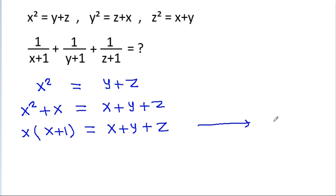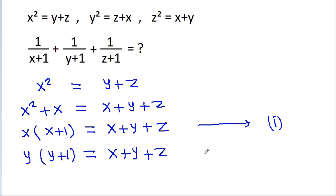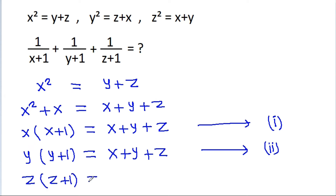We have y squared is equal to z plus x, so by the same way we can get y times (y plus 1) is equal to x plus y plus z. Suppose this is equation 2. And we have z squared is equal to x plus y, so we can get z times (z plus 1) is equal to x plus y plus z. Suppose this is equation 3.